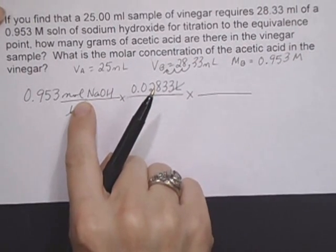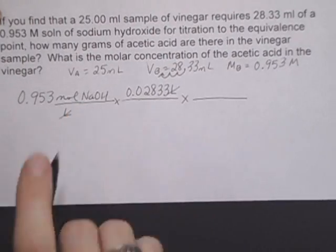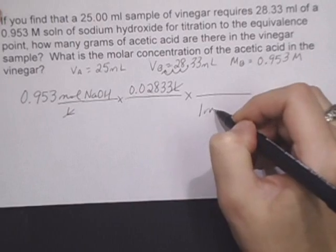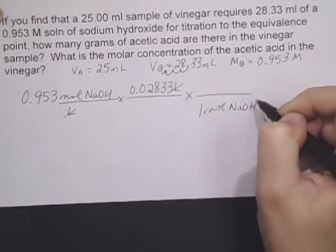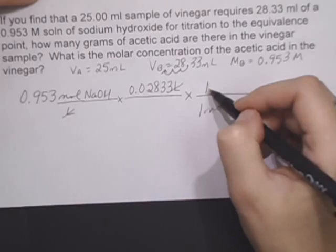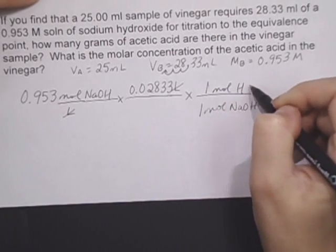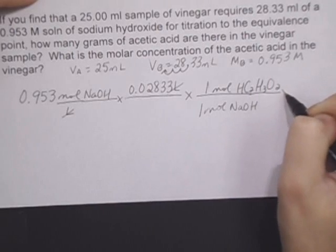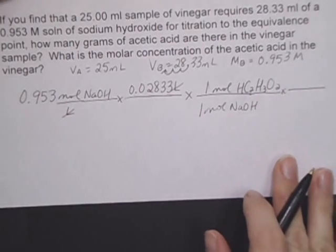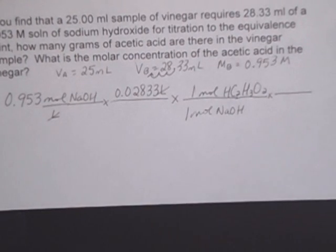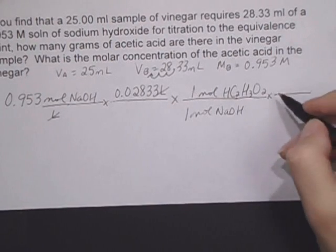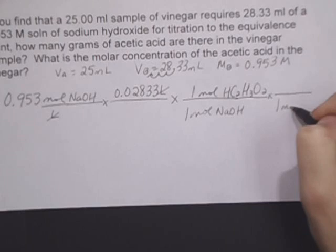Now the liters have canceled out, and we're left with the unit of moles of NaOH. Now I need to switch to my new substance. So I need a mole ratio. From my equation, I have 1 mole of NaOH and 1 mole of acetic acid. And then finally, the question originally asks us, what is the mass of or how many grams of acetic acid? So now I need molar mass.